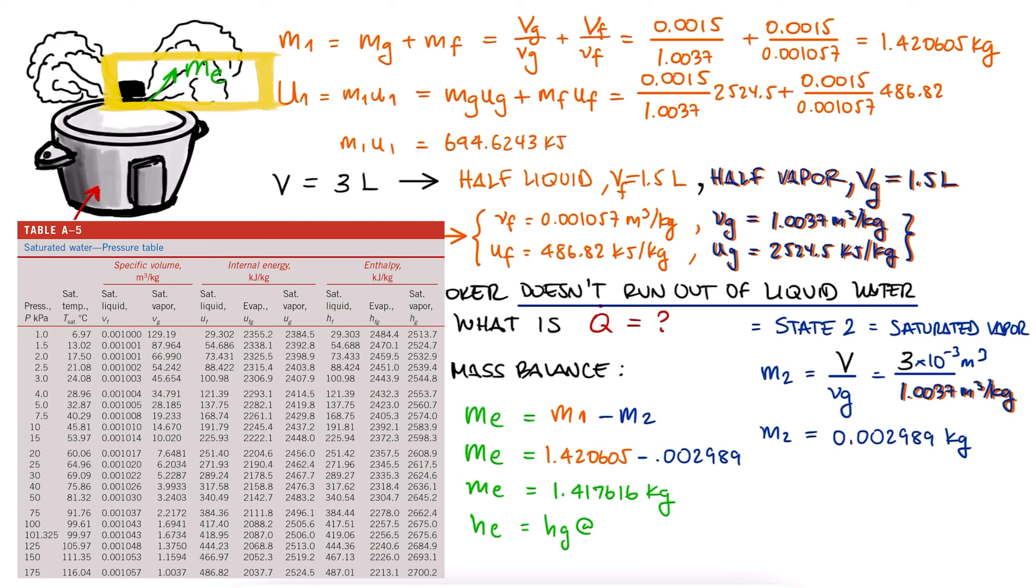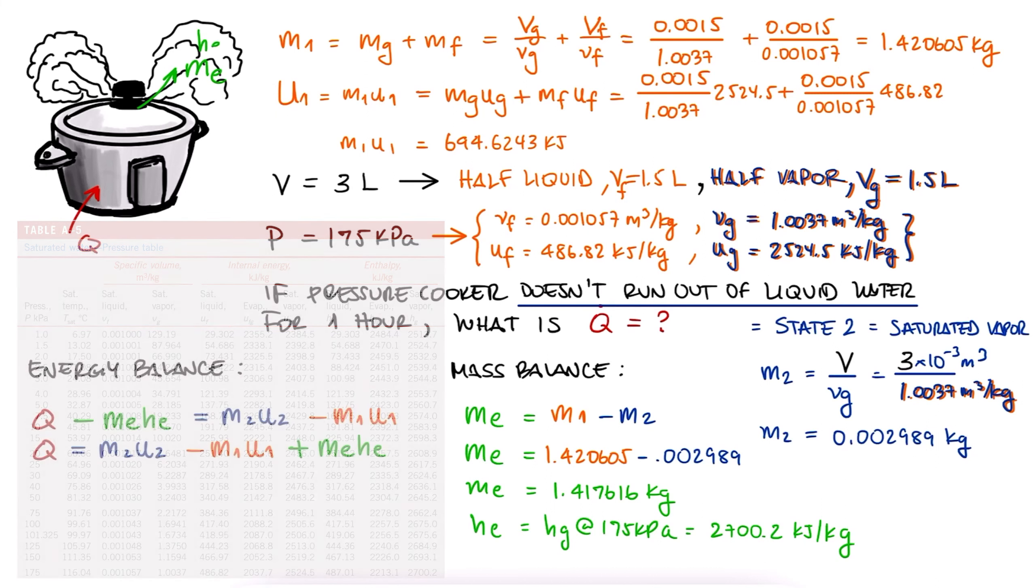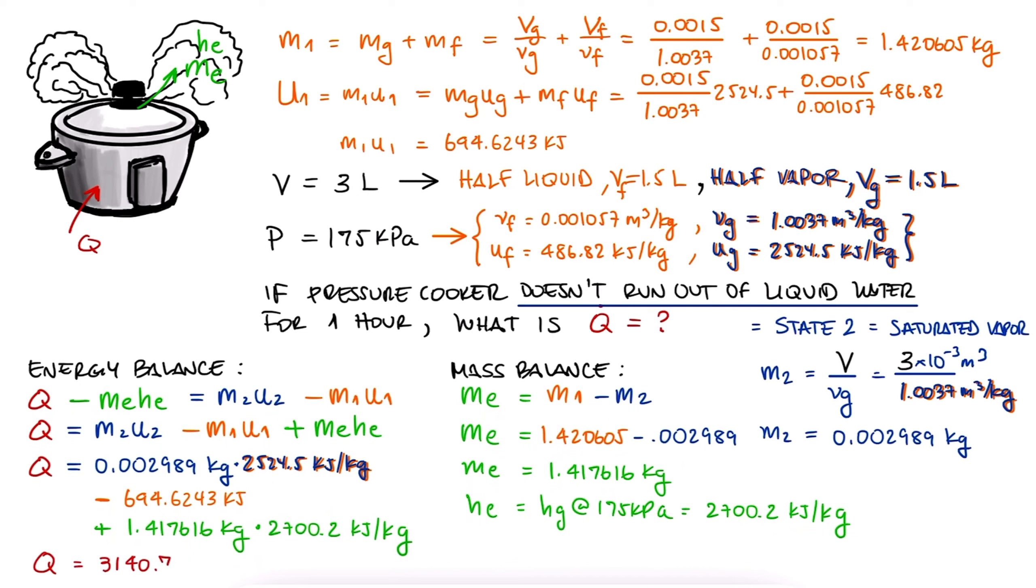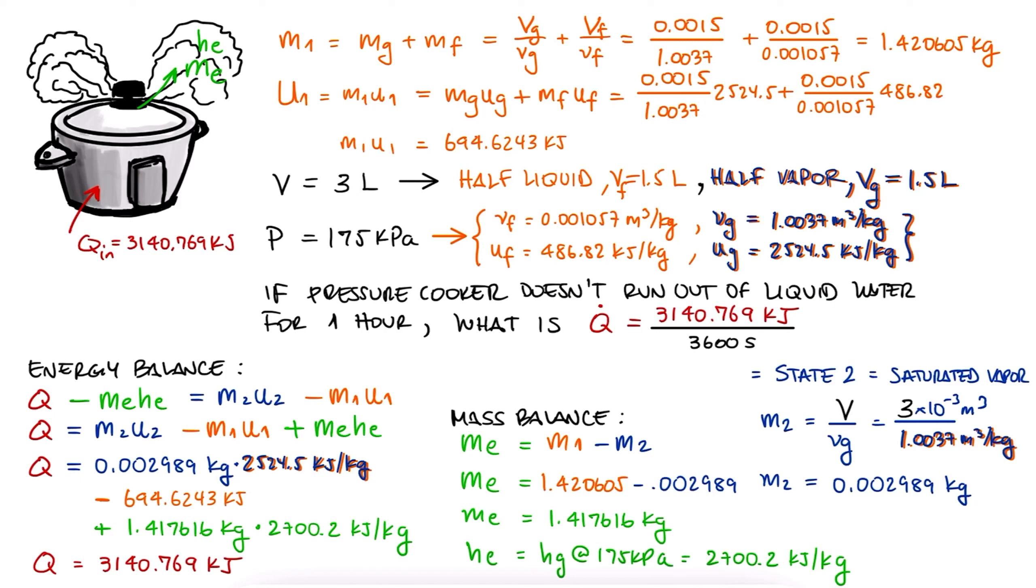And since the mass coming out is saturated vapor, we can look up its specific enthalpy of Hg. We substitute all values we found and find that the heat is 3140 kJ. And this value being positive is consistent with the assumption that heat is coming in. The rate would therefore be this heat over the one hour period given by the problem.